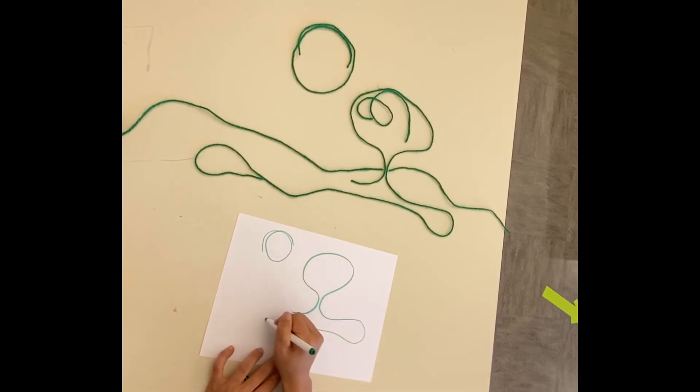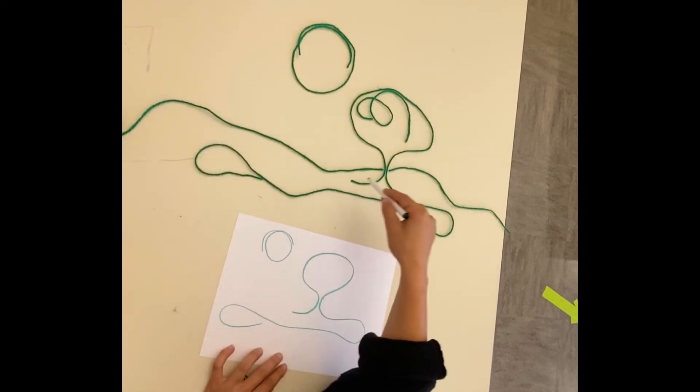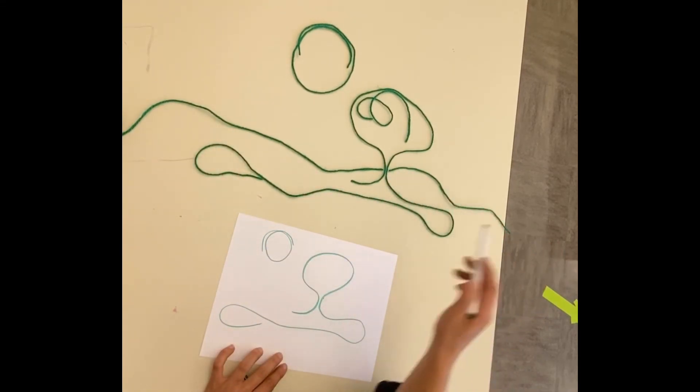So once you have all of your materials out, you can practice tracing over the lines of your yarn in the air like I'm doing here. And then once you feel ready, you can draw that line onto your paper.